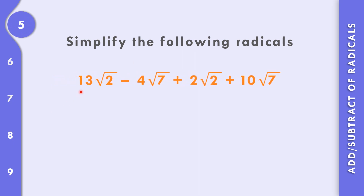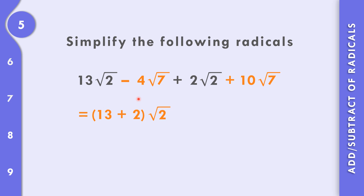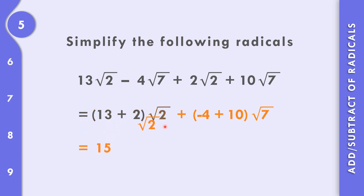In number 5, 13 square root of 2 minus 4 square root of 7 plus 2 square root of 2 plus 10 square root of 7. We have two different radicals, 2 and 7, so we cannot combine them together. We group like terms: 13 square root of 2 plus 2 square root of 2 equals 15 square root of 2. And negative 4 square root of 7 plus 10 square root of 7 equals positive 6 square root of 7. Final answer: 15 square root of 2 plus 6 square root of 7.